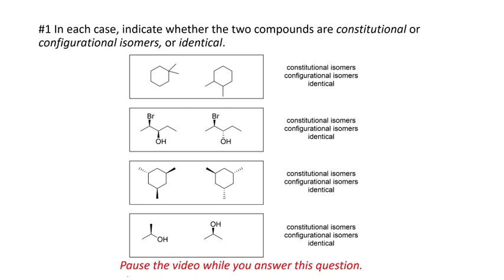Okay, we're back. Did you figure this out? First two. Well, what we can see here is that we have two methyls on the same carbon. That's a 1,1-dimethylcyclohexane. And in the other case, we have a 1,2-dimethylcyclohexane. And since the names are completely different, this has to be a constitutional isomer.